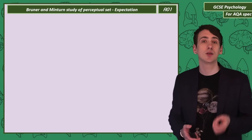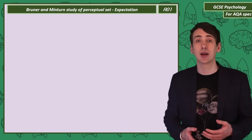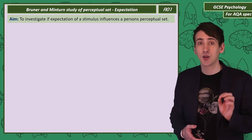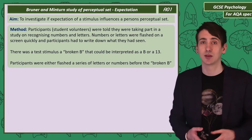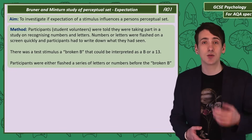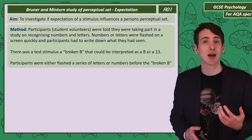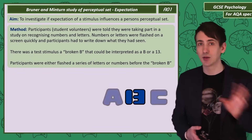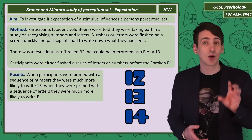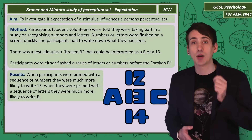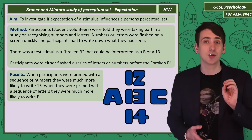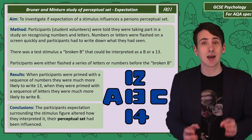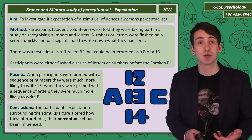Our next study is Bruner and Minturn's study of perceptual set. They investigated if the expectation of a particular stimulus would alter the perception of that stimulus. Participants were told they were taking part in a study on recognizing numbers and letters. The researchers flashed a series of numbers or letters onto a screen, and participants had to write down what they had seen. The test stimulus was a broken B, which could be interpreted either as a B or as a 13. When primed with a series of numbers, participants were more likely to write down 13; when primed with letters, they were more likely to write down B.